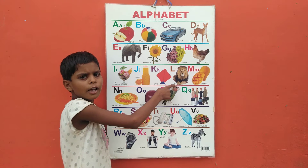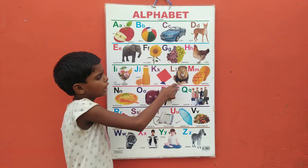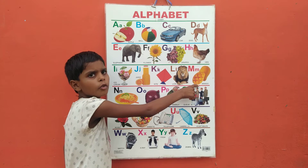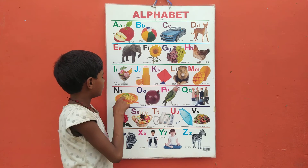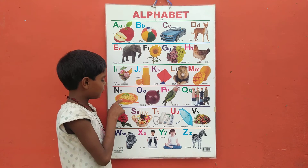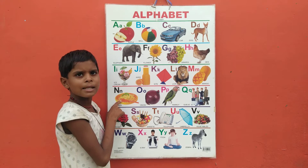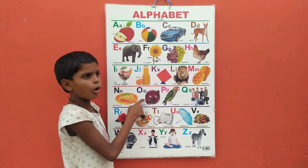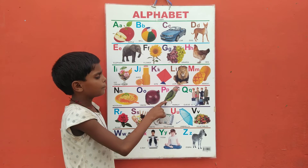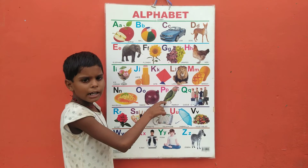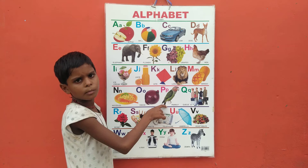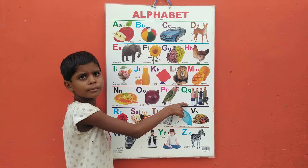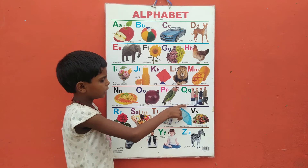K for kite, L for lion, M for mango, N for noodles, O for onion, P for parrot, Q for queen.